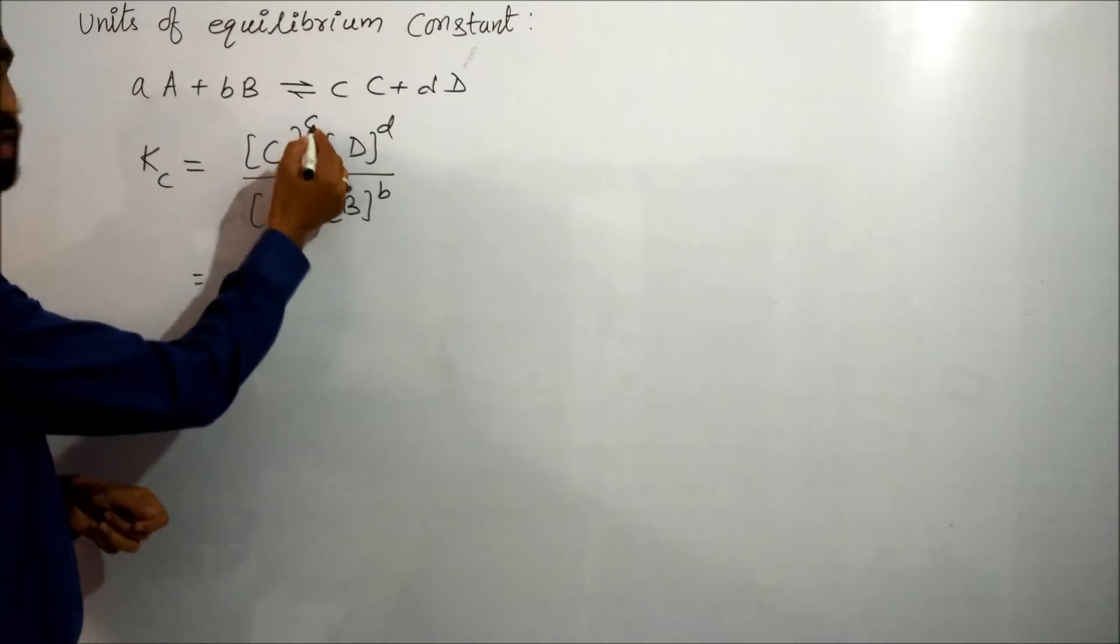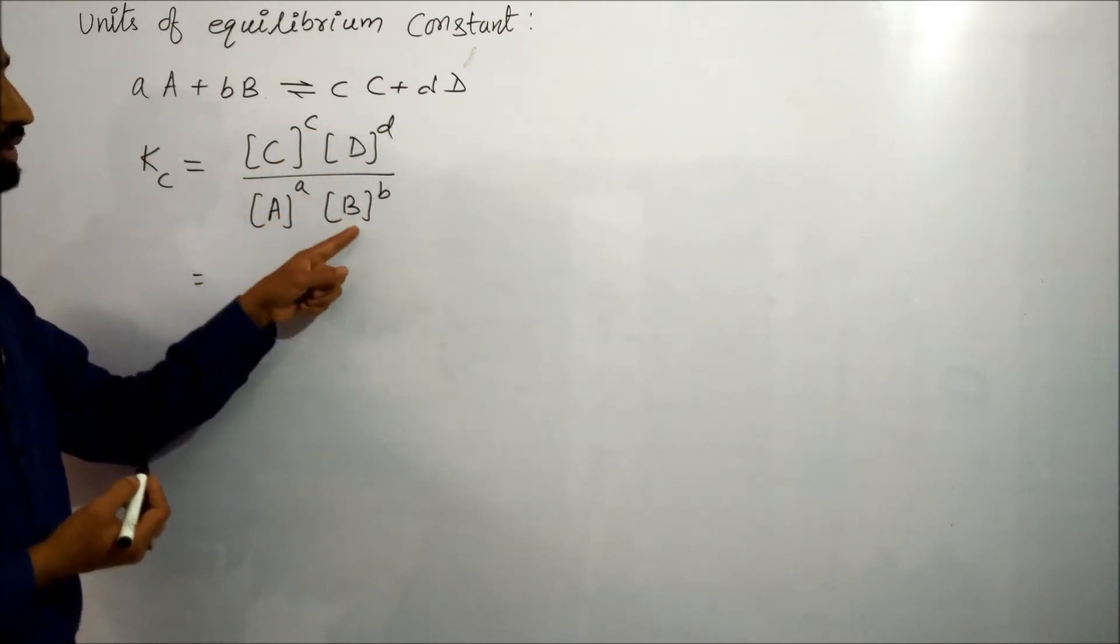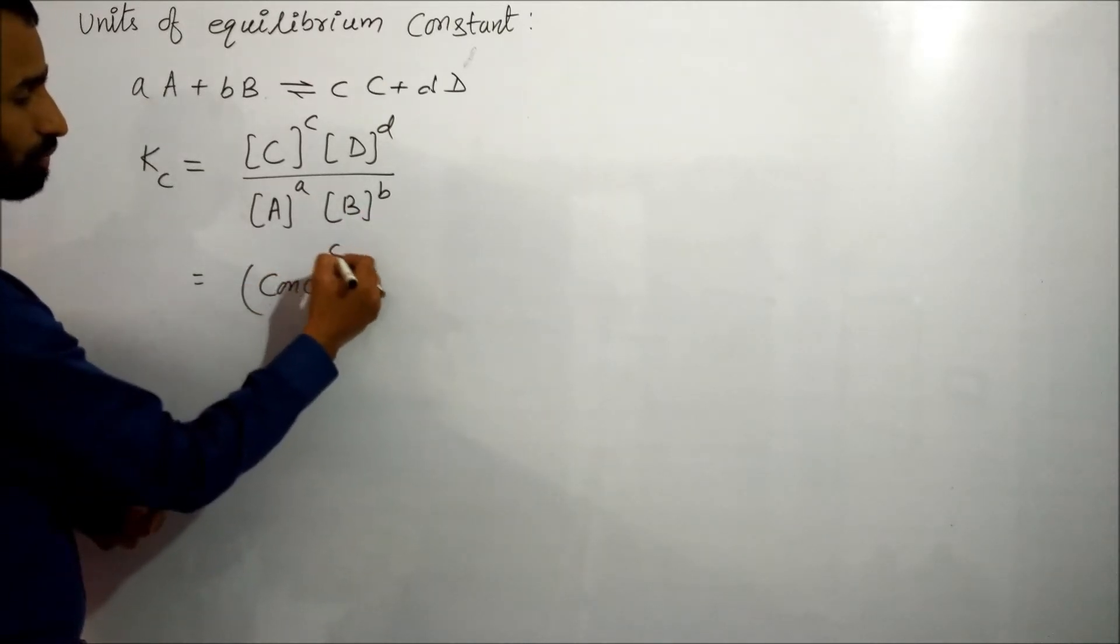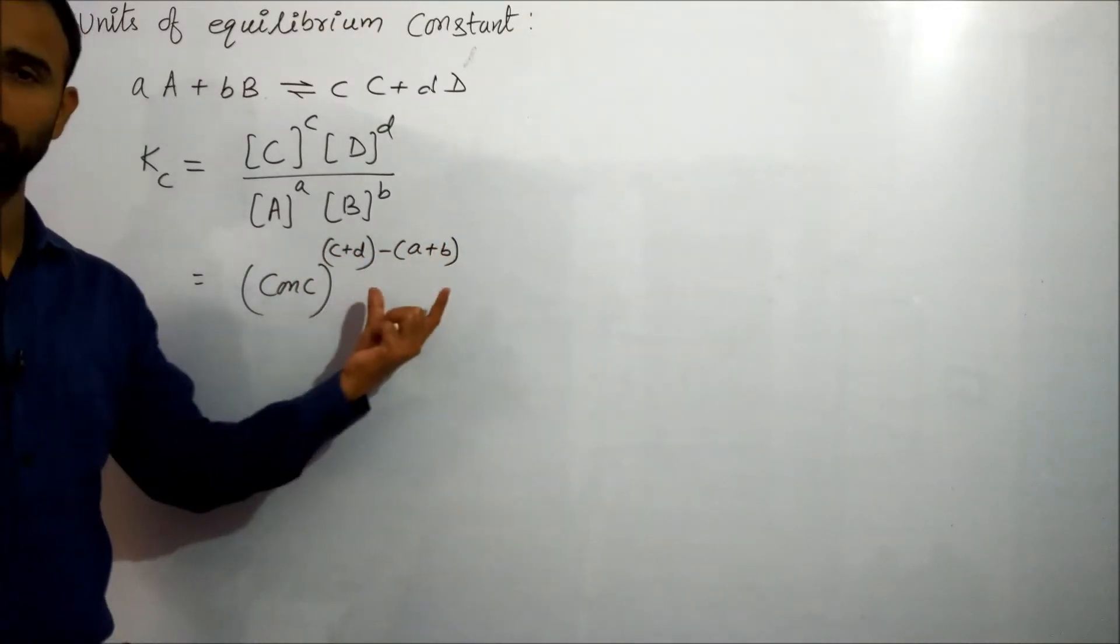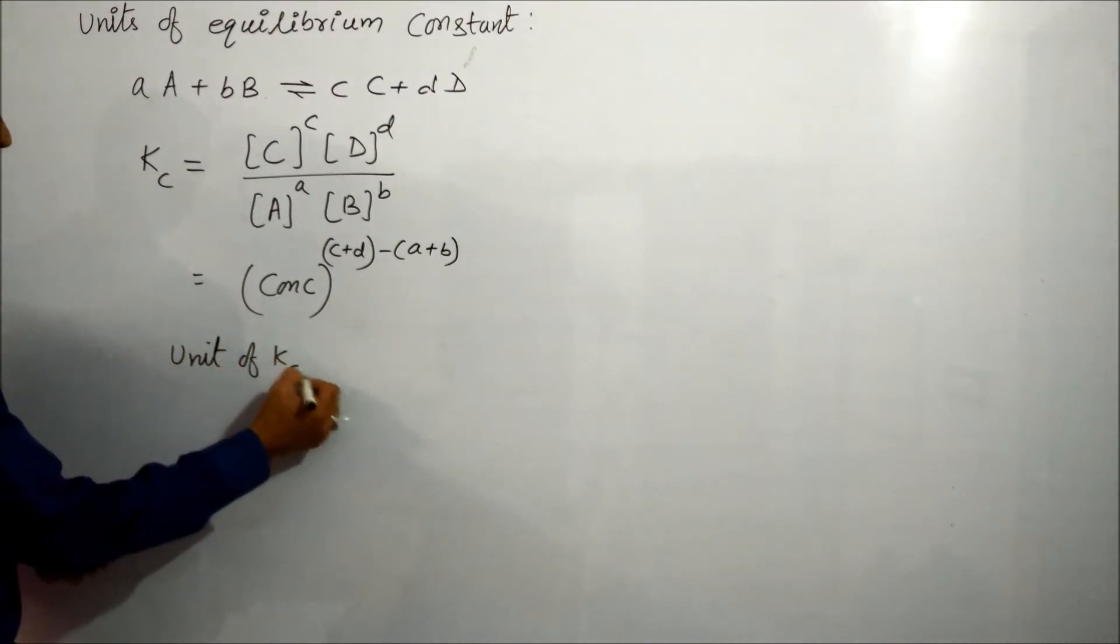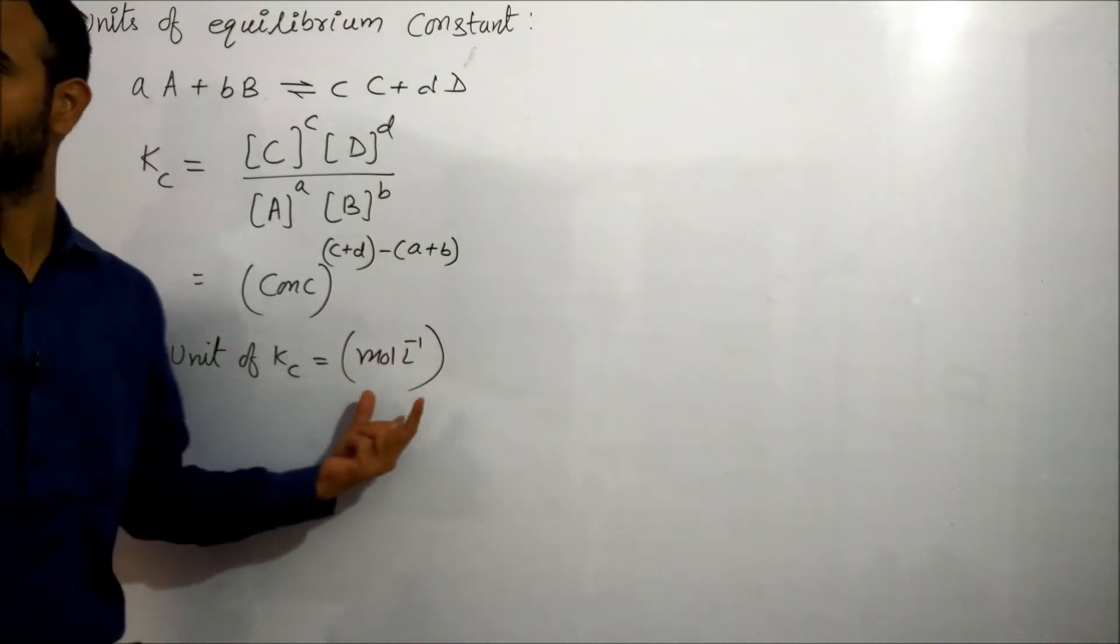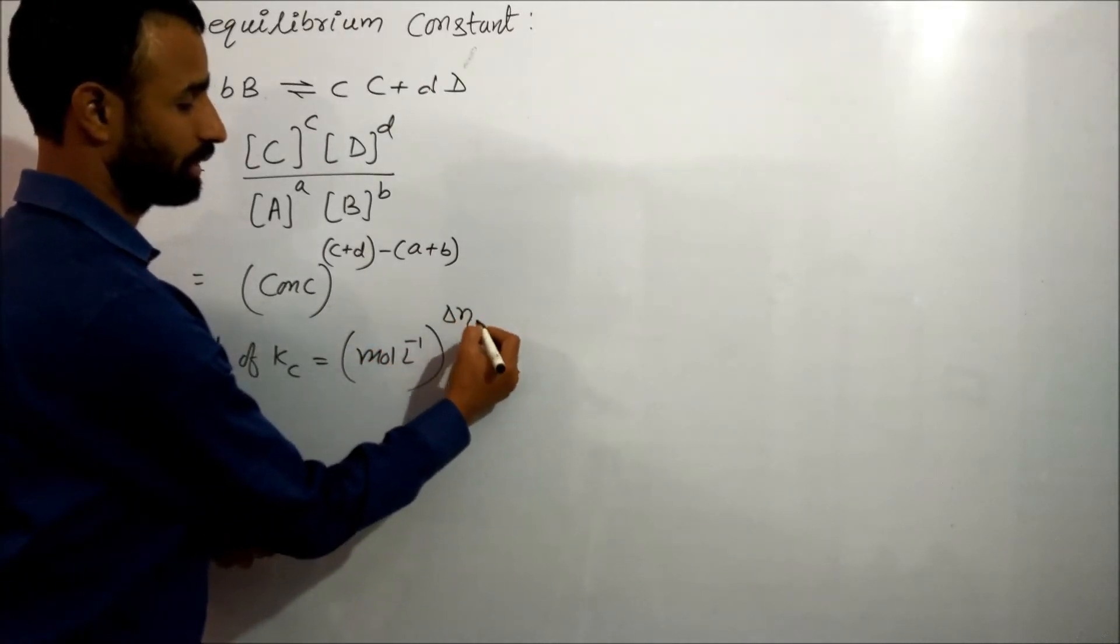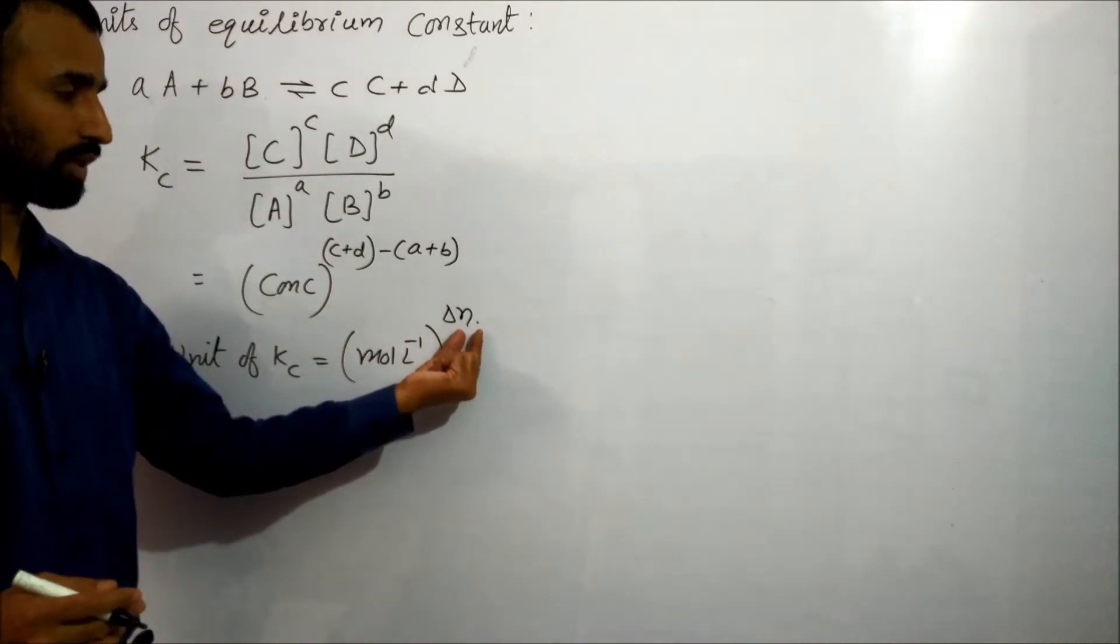Concentration raised to power C, concentration raised to power D, over concentration raised to power A, concentration raised to power B. That means concentration raised to power C plus D minus A plus B. So we can say unit of Kc is equal to mole per liter raised to power delta N, change in number of moles.